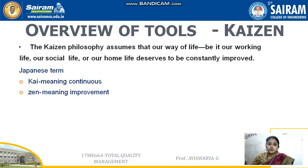Good morning all. Today I am going to give a lecture on Kaizen. We have seen about continuous process improvement, Juran's trilogy cycle, plan-do-check-act cycle in our previous presentation. In this presentation I am going to explain about Kaizen. Kaizen is a Japanese term where 'Kai' means continuous and 'Zen' means improvement. Together it means continuous improvement. So we shall see the definition.